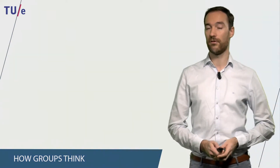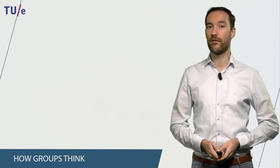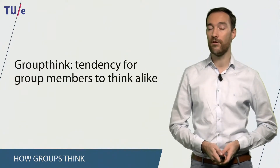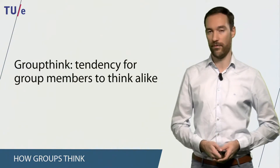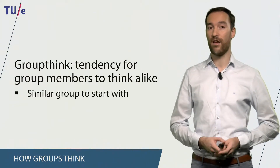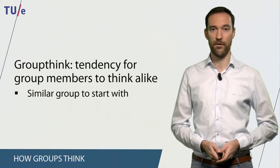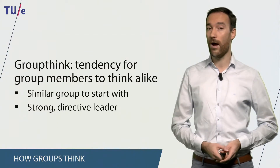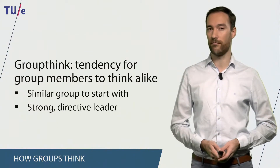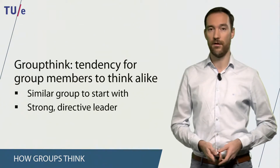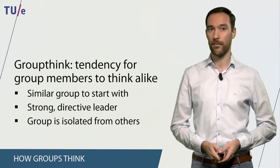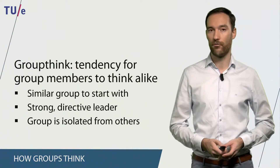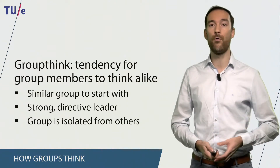Members of groups can influence each other in many different ways. The most common theory to explain how groups think is groupthink — a tendency for group members to think alike or to agree with one another. This tendency is higher when you have a similar group to start with, so if members already share the same values and norms. It is also higher when there is a strong directive leader, or when a group is isolated from other people or groups and less likely to hear opposing arguments.